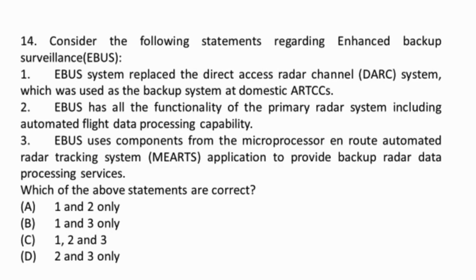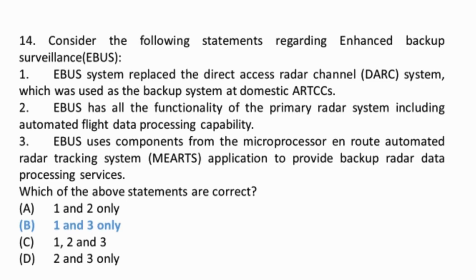Question 14: Consider the following statements regarding enhanced backup surveillance. The enhanced backup surveillance system replaced the direct access radar channel system, which was used as the backup system at domestic air traffic control centers. It uses components from the microprocessor en route automated radar tracking system application to provide backup radar data processing services. It does not have the functionality of the primary radar system including automated flight data processing capability — thus statement 2 is incorrect. The enhanced backup surveillance system provides surveillance services and weather information for controllers in the event the primary host computer system fails or is shut down for maintenance, and adds safety features not previously available.